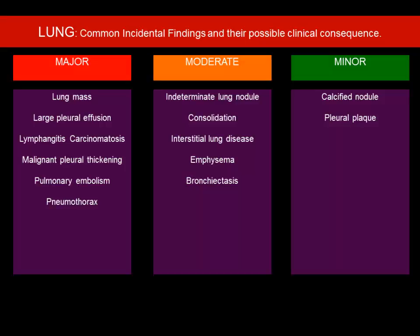For moderate findings: an indeterminate lung nodule — how often to follow up and how to manage it? Consolidation, interstitial lung disease, emphysema, and bronchiectasis we see quite frequently. In fact, every patient has some emphysema changes if they are smokers or elderly — whether to document that is variable. But if it's a calcified nodule, visible in bone window, it is likely a granulomatous disease and less likely to have clinical significance.